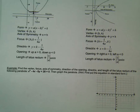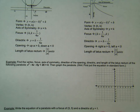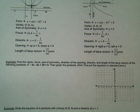Let's look at our first example. You are asked to find the vertex, focus, axis of symmetry, direction of opening, directrix, and the length of the latus rectum of the following parabola: x squared minus 4x minus 8y plus 28 equals 0. Then you are asked to graph the parabola.